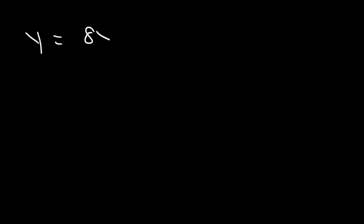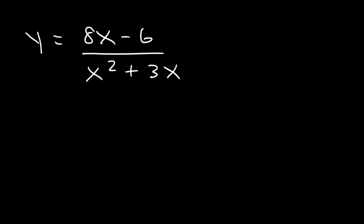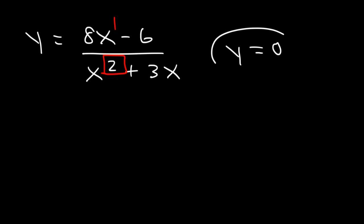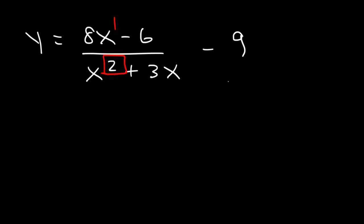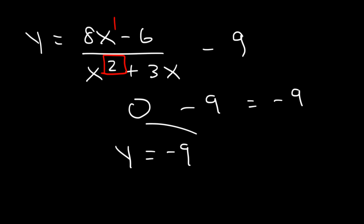Now what about 8x minus 6 over x squared plus 3x? This function is bottom-heavy — the degree of the denominator is 2 and the degree of the numerator is 1 — so it's going to be y equals 0. But if we add negative 9 to it, it's going to be 0 minus 9, so the horizontal asymptote is y equals negative 9.